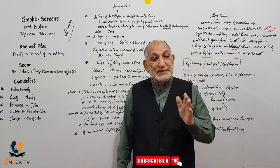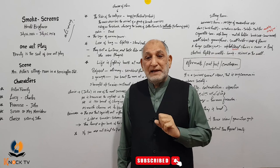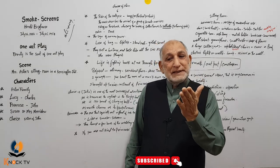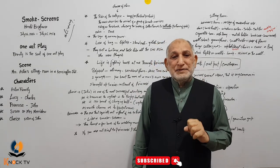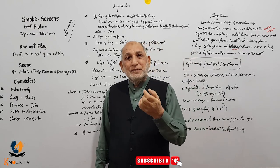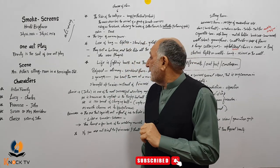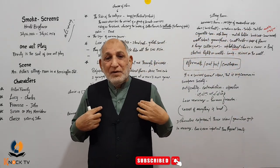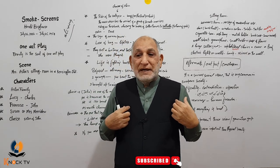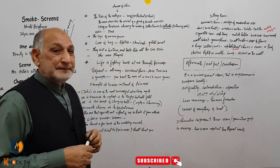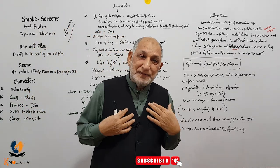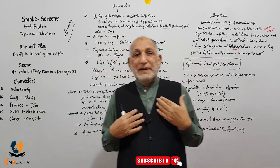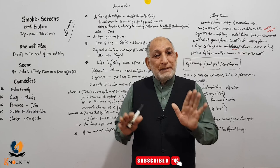جب Susan دیکھتی ہے کہ رشتے کی بات نہیں بن رہی تو اپنا دوسرا مقصد بتاتی ہے — وہ ایک international peace society کے لیے کام کرتی ہے اور charity چاہیے۔ Lucy کہتی ہے جب میں پریشانی میں تھی تو کسی نے ساتھ نہیں دیا — میں کیوں اس international society کے لیے چندہ دوں؟ Susan مایوس ہو جاتی ہے۔